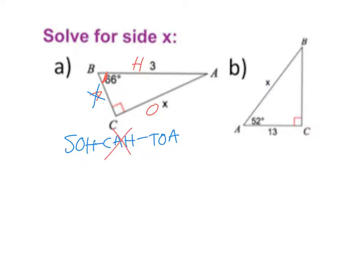That tells us it's going to be sine. Setting up the sine formula: sin(θ) = opposite/hypotenuse. So sin(66°) = X/3. Now you're at the stage of solving for X. Make sure you're in degree mode.